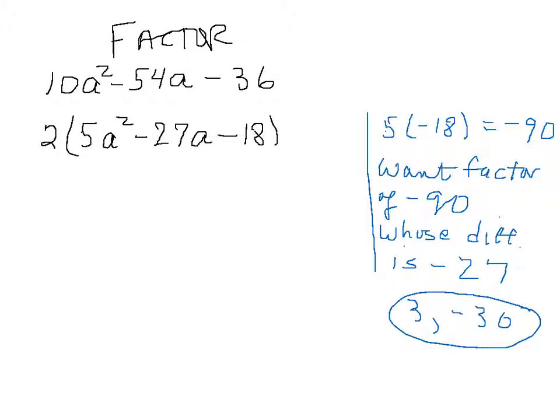What I do is I rewrite this now as 2 times—let's see if we can do it correctly—5a squared plus 3a minus 30a minus 18. Now we group. And what we can take out of the first two terms is just an a, and I get a 5a plus 3.